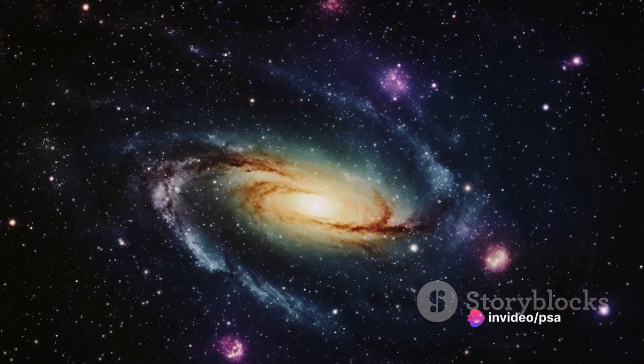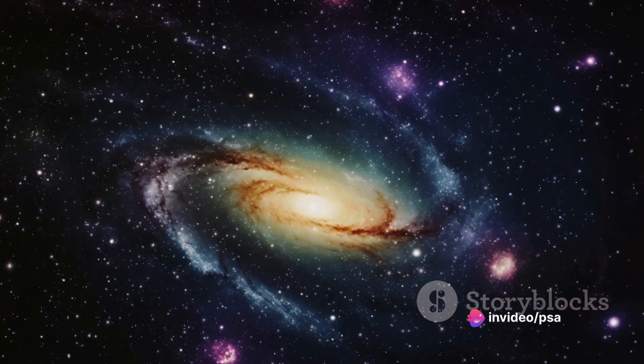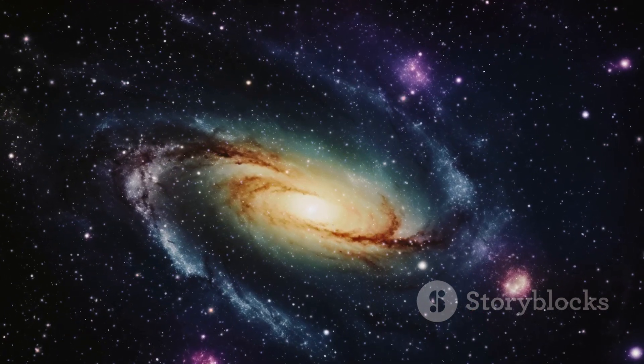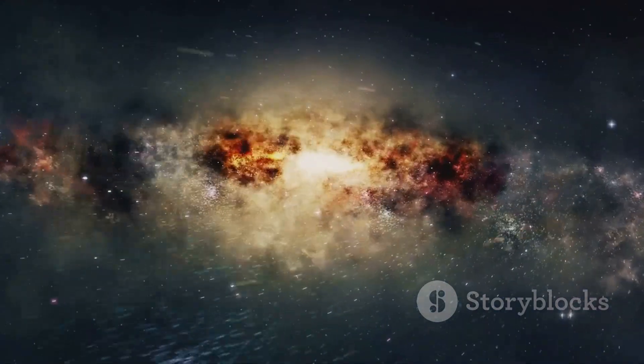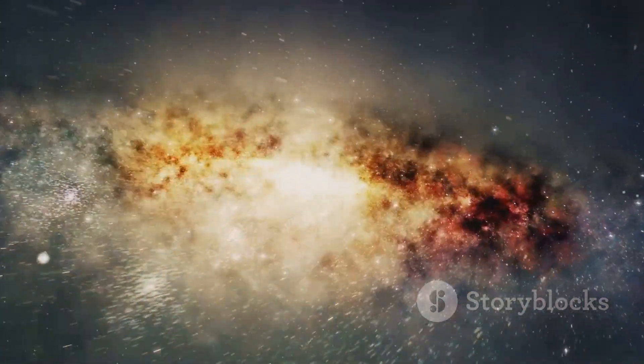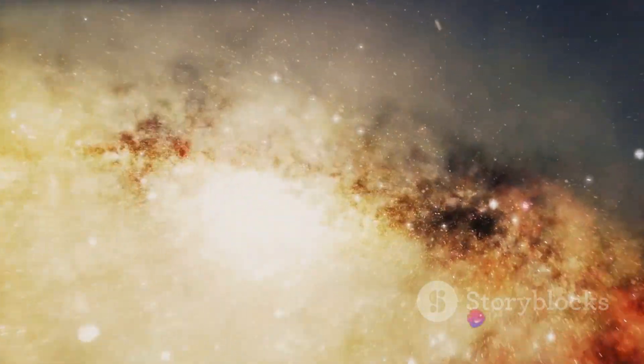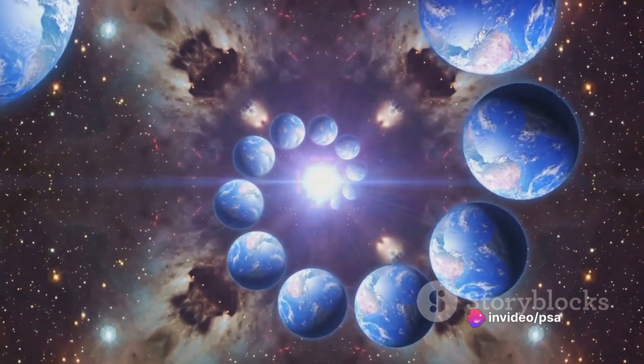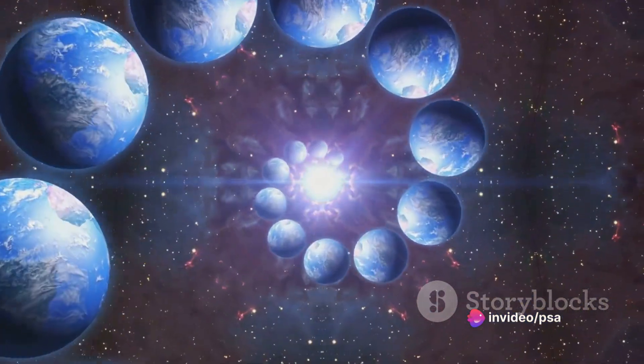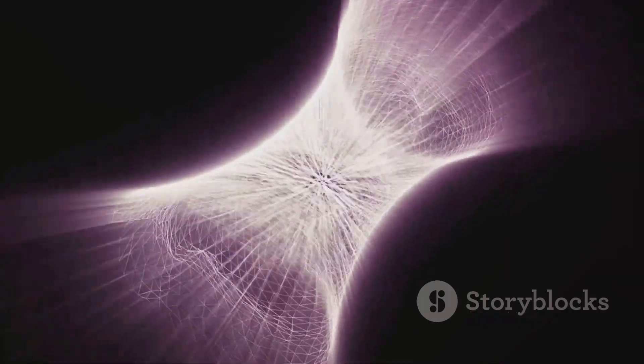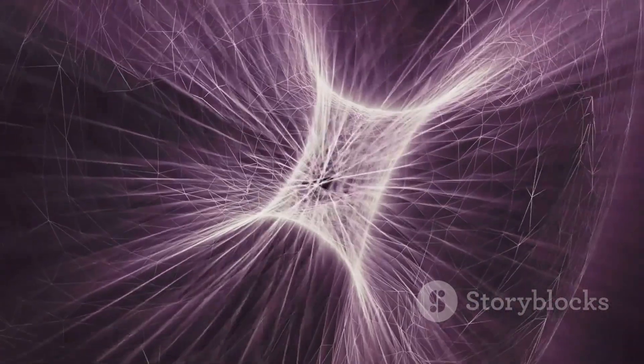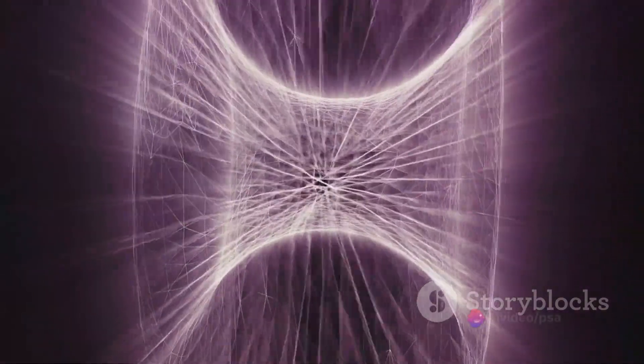As this process unfolds, the universe gradually loses energy, with the stars' fiery hearts extinguished and the galaxies' vibrant dance slowing to a standstill. The Big Freeze theory is fundamentally a tale of entropy, a measure of disorder or randomness in a system. As the universe expands, it's proposed that it will eventually reach a state of maximum entropy. This is a state of equilibrium, where all the universe's energy is evenly distributed, and no more work can be done.